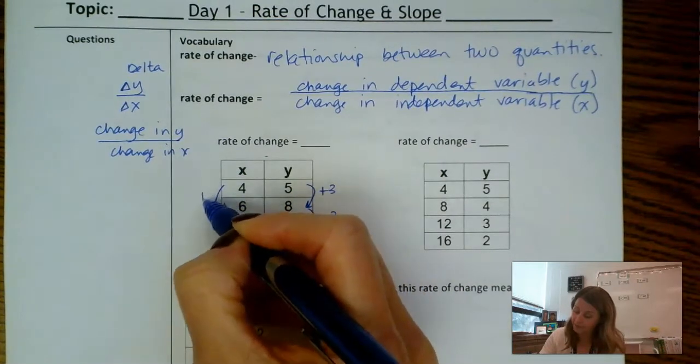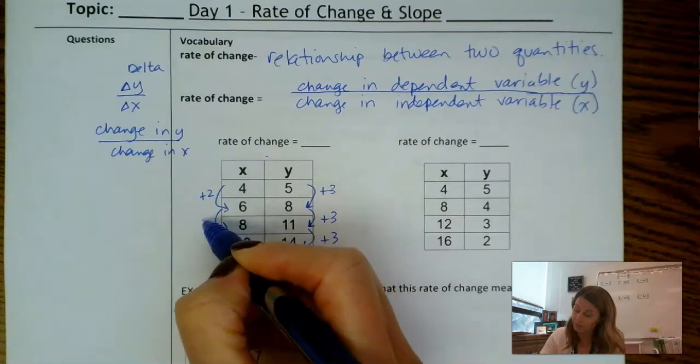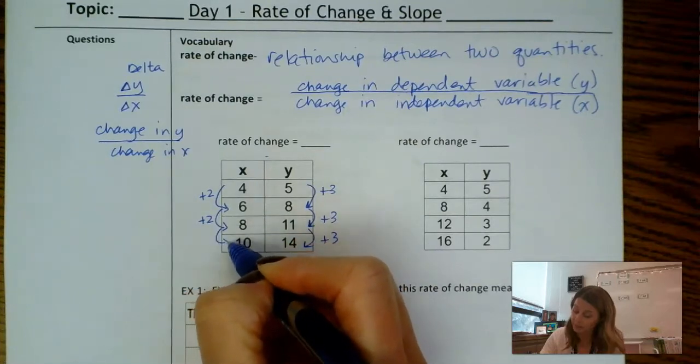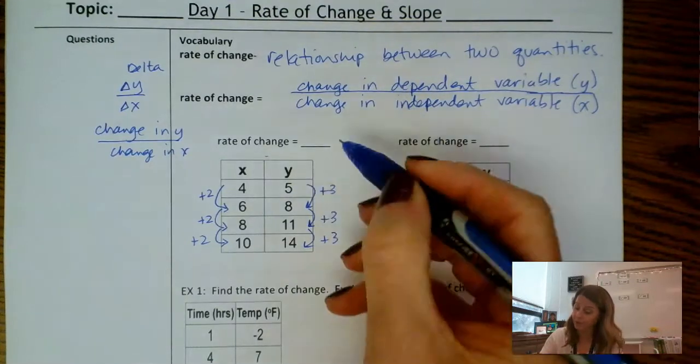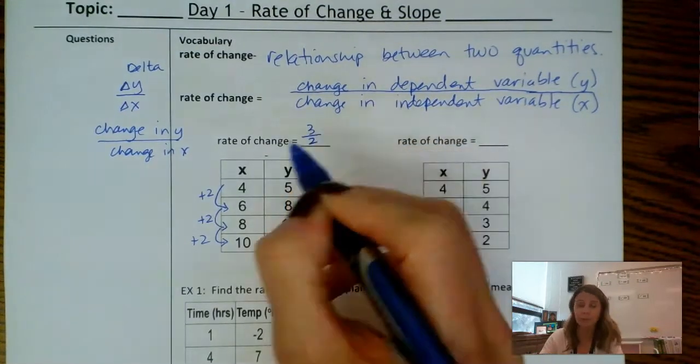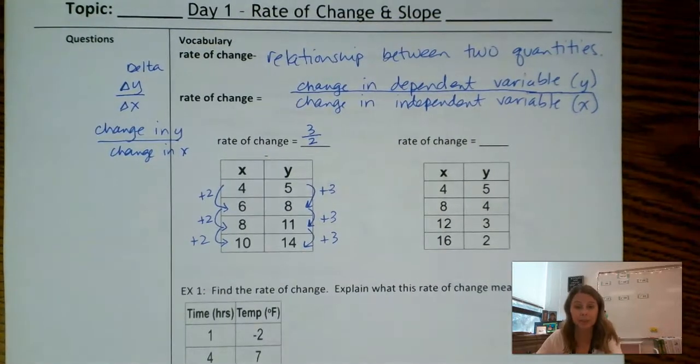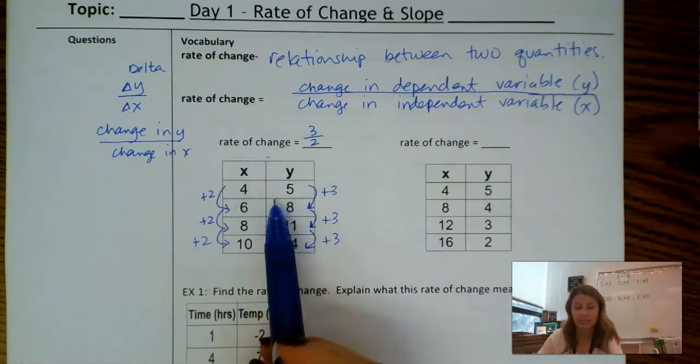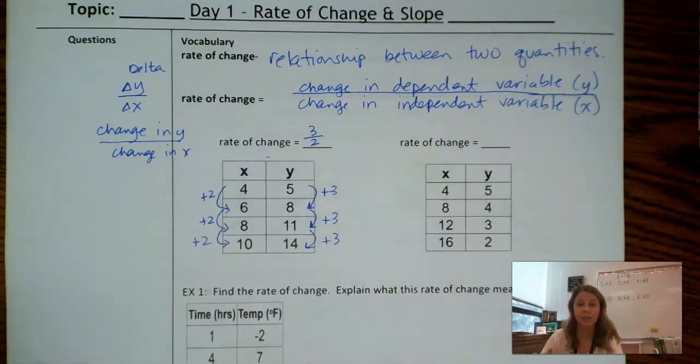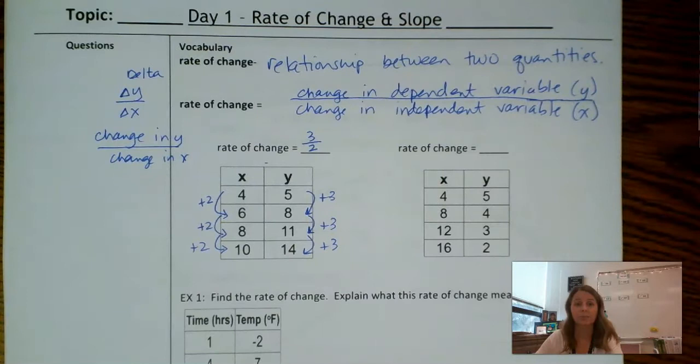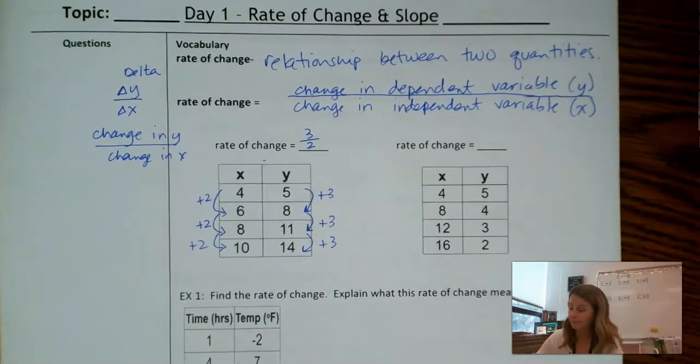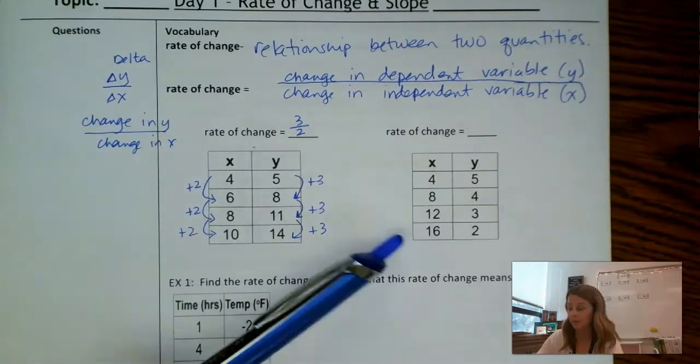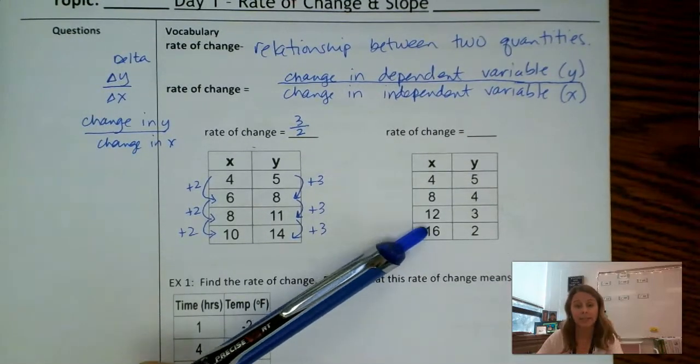Let's do change in x. 4 plus 2 is 6, plus 2 more gives me 8. So my change is 2. If I do change in y over change in x, 3 over 2 is my rate of change. And we're simply doing slope here. We're simply subtracting the y's divided by subtracting the x's. It's just another way of finding slope. But I want you to be aware that rate of change is a slope. So I want you to pause the video and I would like you to do the rate of change on the second table here.